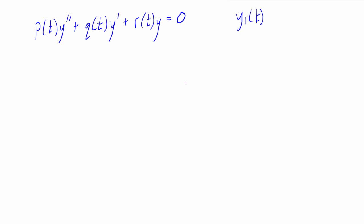To get started, the reduction of order method takes this second order differential equation and reduces it down to a first order differential equation using some changes of variables, making it easier to work with. So if we're given y1 of t, we're going to assume there's another solution y2, which is a function of t equal to v of t times y1 of t. Right now we don't know what v of t is, but part of the process is finding it so we can find y2. To keep the math clean, we'll drop the brackets and write y2 equals v times y1.